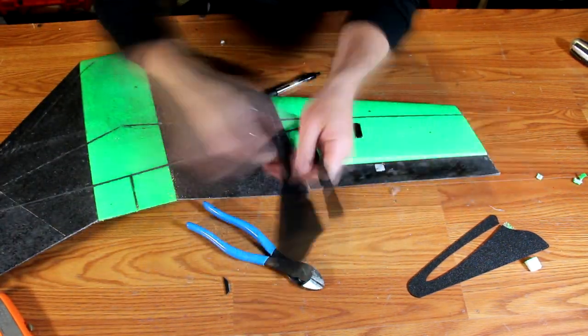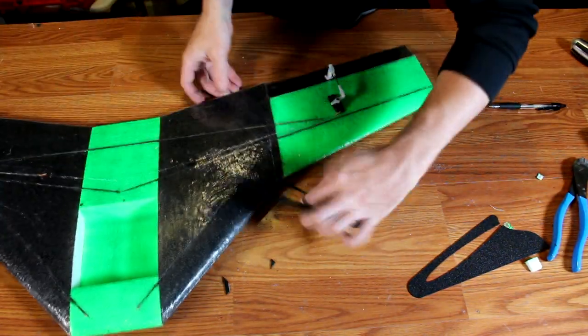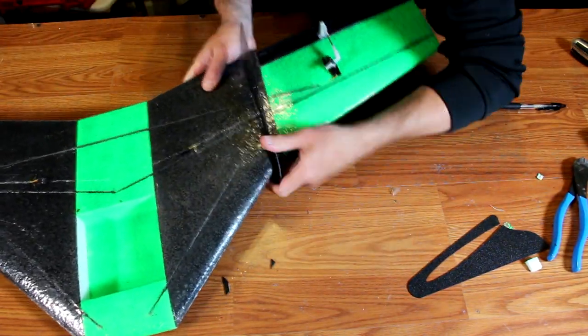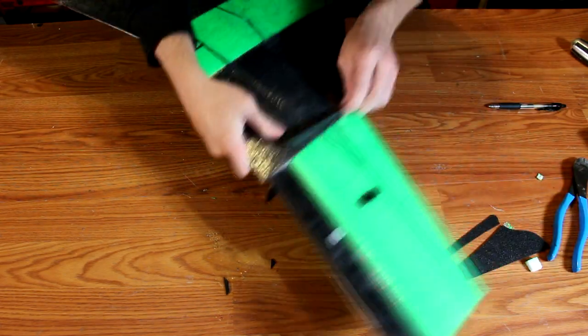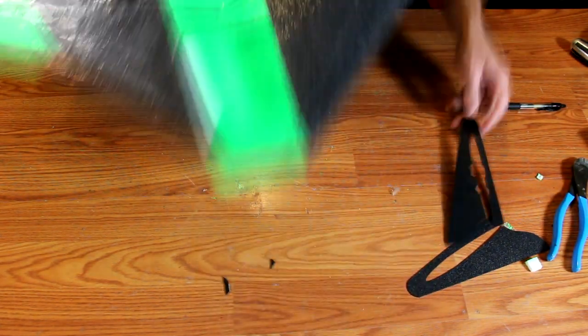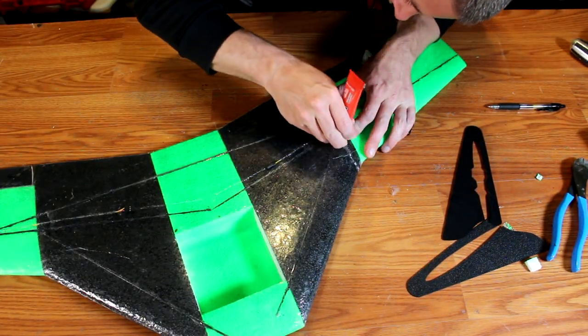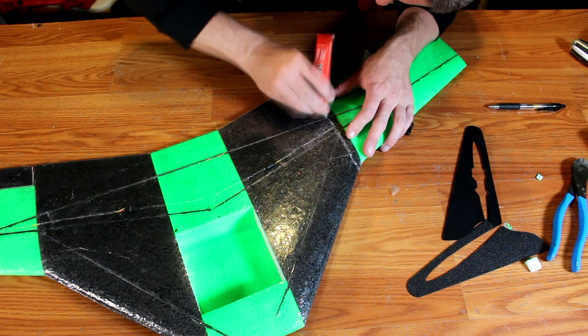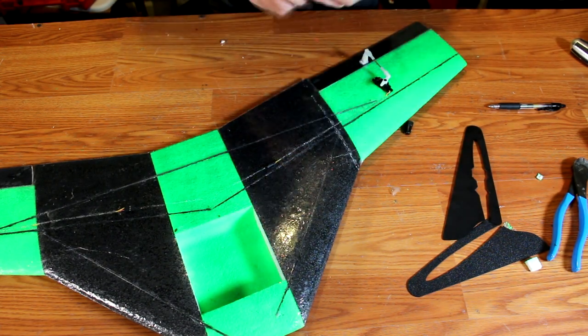Once the notches are cut out, once again, dry fit the stabilizer to the airplane to verify that it's going to fit in place. Once you verify that it fits in, fill the gap with glue, slide the stabilizer into place, and let dry overnight.